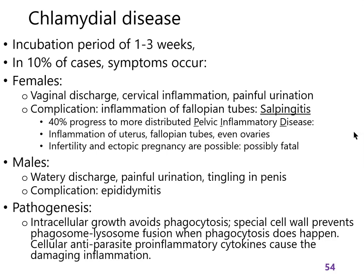Complications involve the bacteria moving up the female reproductive tract toward the ovaries, or into surrounding tissues. A similar pattern occurs in males, with complications involving movement up the reproductive tract toward the testes. Since the bacterium grows within cells, the immune system has limited opportunities to fight it — antibodies are largely useless — leading to an anti-parasitic inflammation that itself causes damage.